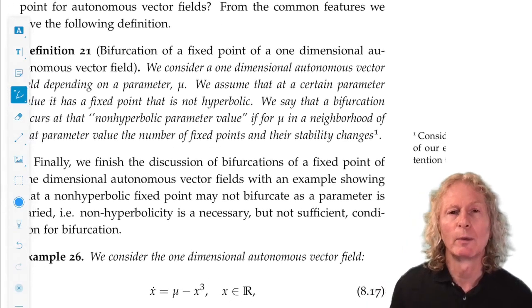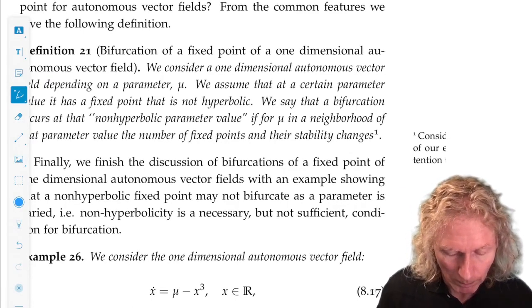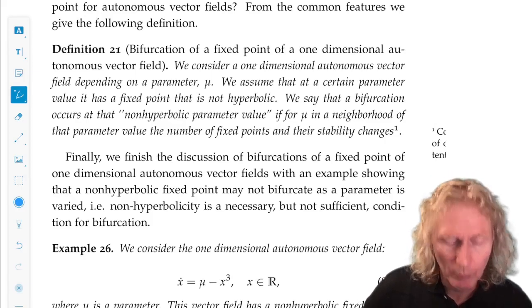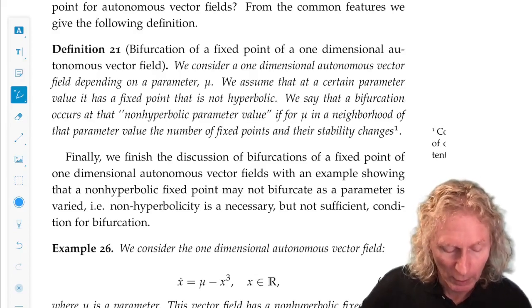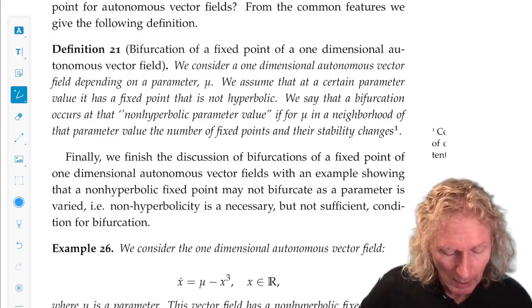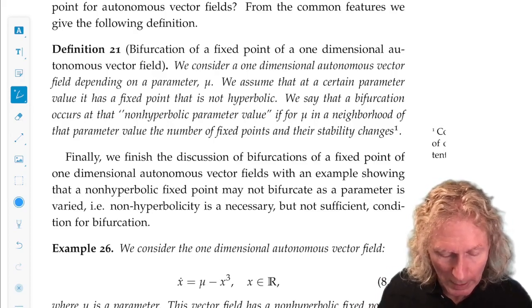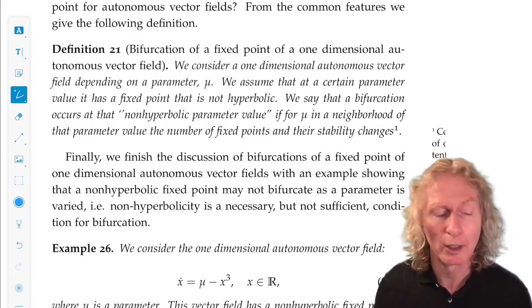So, we consider a one-dimensional autonomous vector field, depending on a parameter μ. We assume that at a certain parameter value, it has a fixed point that is not hyperbolic. We say that a bifurcation occurs at that non-hyperbolic parameter value if, for μ in a neighborhood of the parameter value, the number of fixed points and their stability changes.